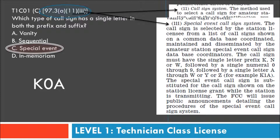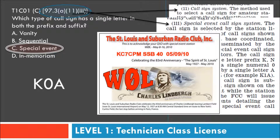So the answer is C, special event. What exactly is a special event? Here is a poster from a real special event. The call sign was W0L, which falls into this category. This was from the St. Louis and Suburban Radio Club back in 2010 — a special event to celebrate the 83rd anniversary of Charles Lindbergh leaving Lambert Field. Since it was a special event, they coordinated and obtained a special call sign for the event.